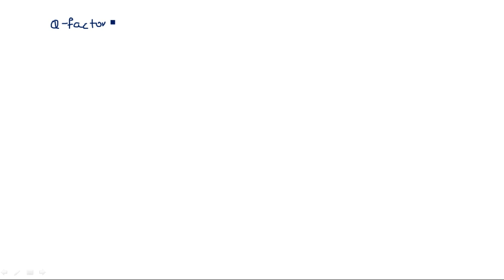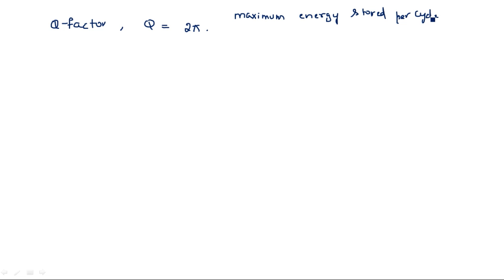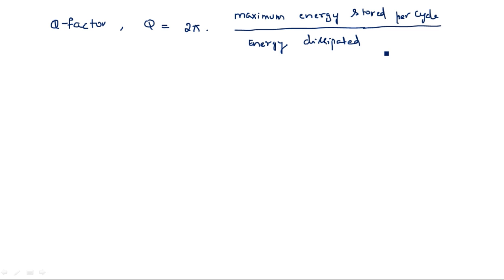From the definition, the quality factor Q is given by: Q equals 2π times the maximum energy stored per cycle, divided by the energy dissipated per cycle. For a waveguide, the energy stored primarily depends on the volume.